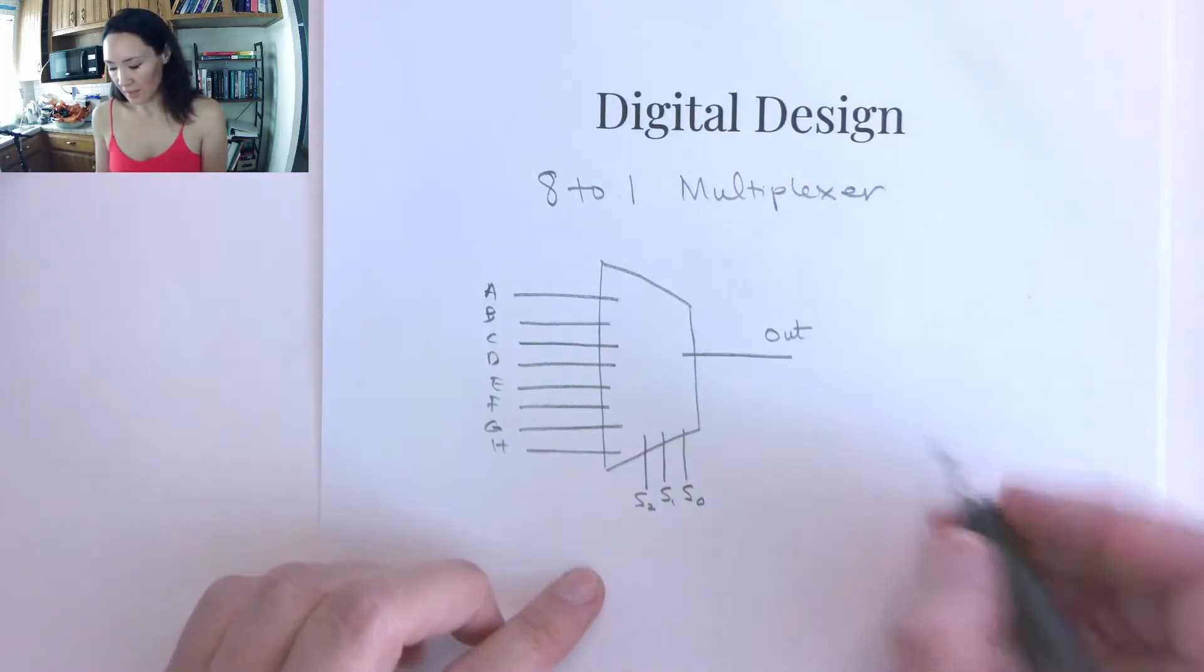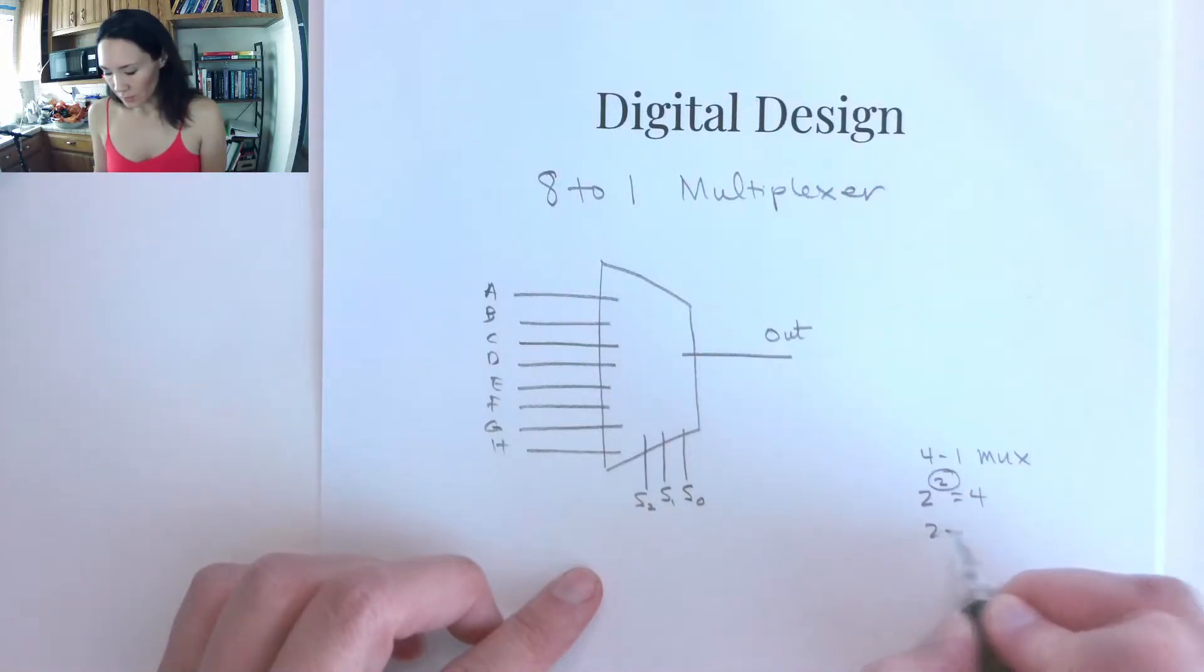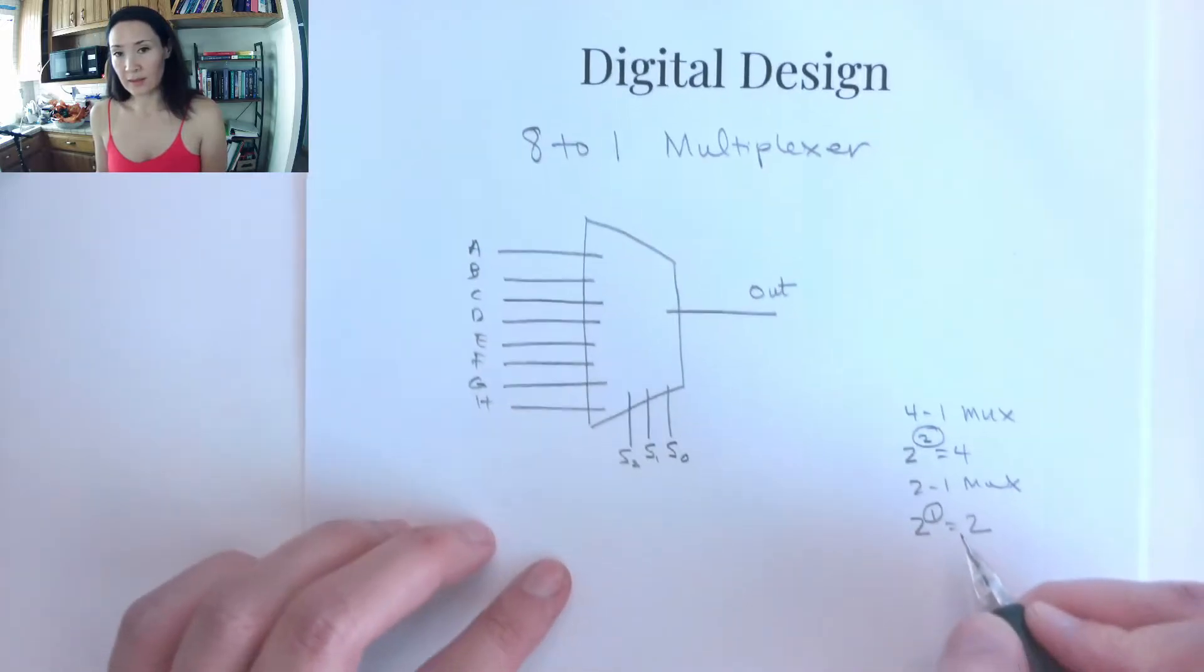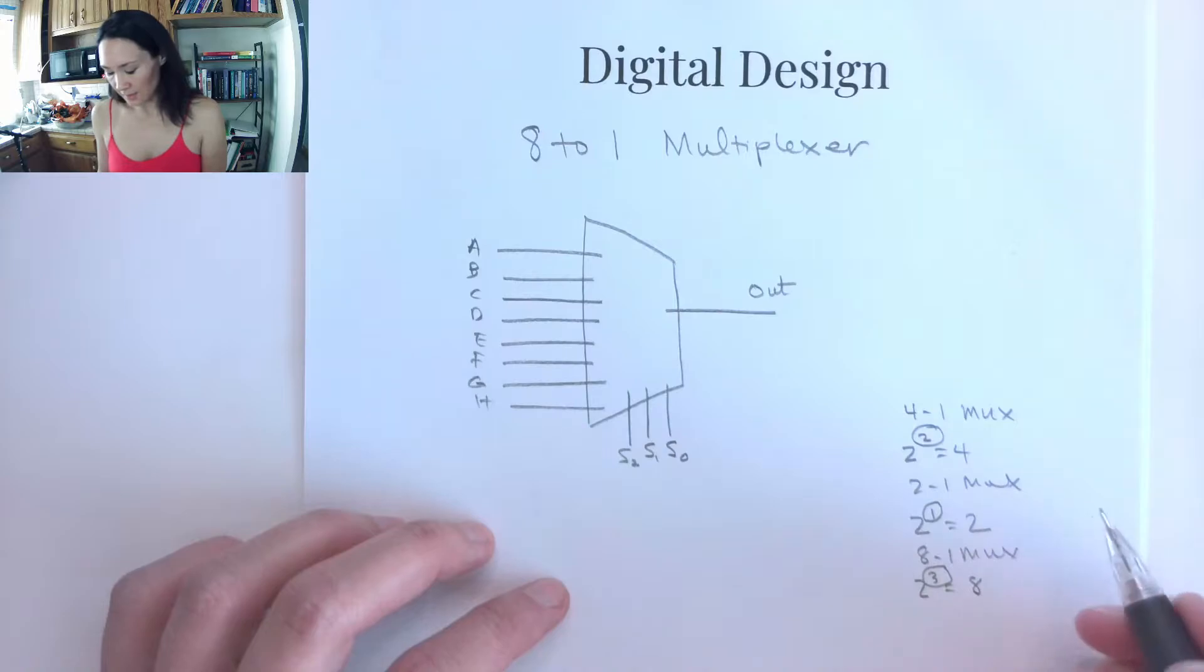So what I mean by that is for the 4-to-1 multiplexer, we need to be able to count up to 4. So 2 to the 2 is equal to 4, so that means we need 2 select lines. For the 2-to-1 multiplexer, we need to count up to 2. So 2 to the 1 is equal to 2, so that means we need 1 select line. For this 8-to-1 multiplexer, we need to be able to count up to 8. So 2 to the 3rd is equal to 8, so that means we need 3 select lines.